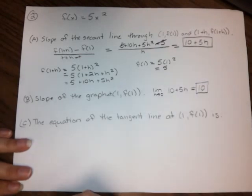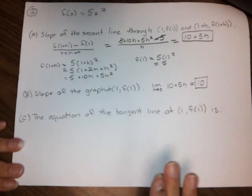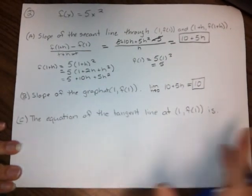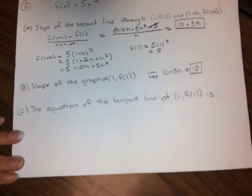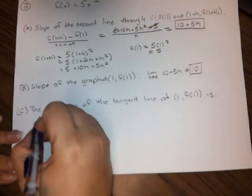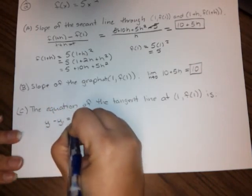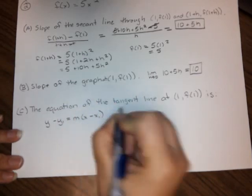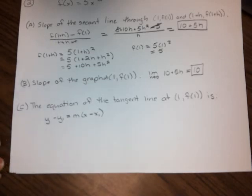And then the last thing they're looking for is the equation of the tangent line at (1, f(1)). You probably remember either from earlier sections or even from high school that you have a formula y minus y1 equals m times (x minus x1). And that's the formula we're going to use here, but to make things simpler in MyMathLab so that you don't have to do any kind of expanding or multiplying...